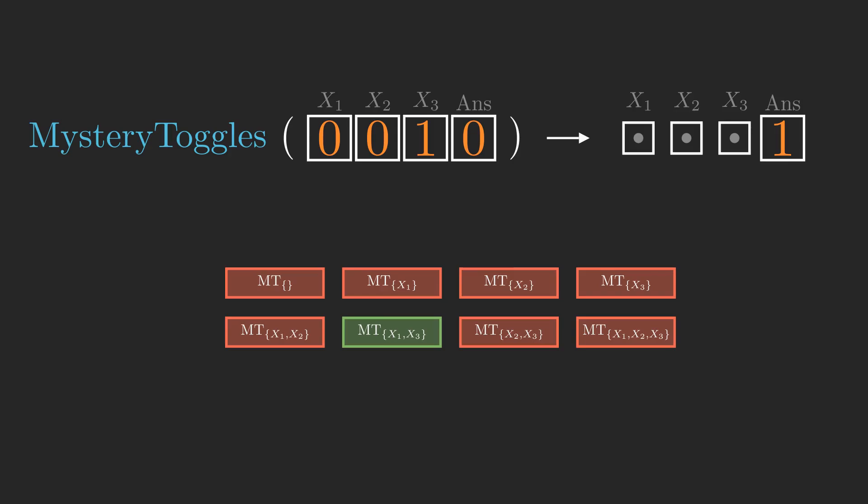We called mystery toggles three times. We are trying to solve the problem using mystery toggles as few times as possible, so the question arises: can we do better?